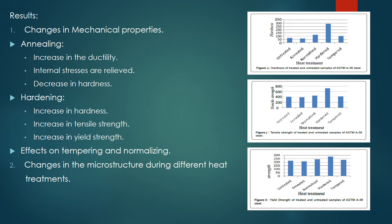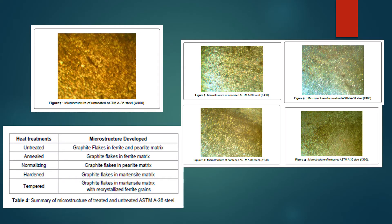Now let's talk about the effects of heat treatment on the microstructure. The microstructure of the untreated steel has two main constituents: ferrite and pearlite. As you can see in the figure, the light colored region is ferrite whereas the dark colored region is pearlite. When the specimen is subjected to annealing, the ferrite grains undergo complete recrystallization. Due to the slow cooling in annealing, austenite is transformed to soft pearlite and also mixed with ferrite or cementite, which increases the brittleness of the steel.